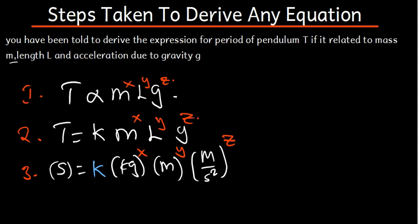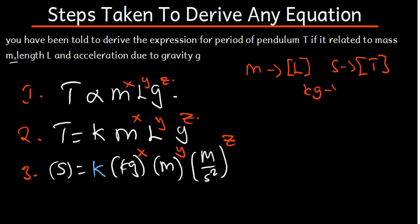Step 4: when it comes to dimensional analysis, we are going to put the appropriate dimensions for each unit. Where there is meters, we put length in square brackets [L]. Where there is seconds, we put time in square brackets [T]. Where there is kg, we put mass in square brackets [M]. So where there is meters, we put length [L].